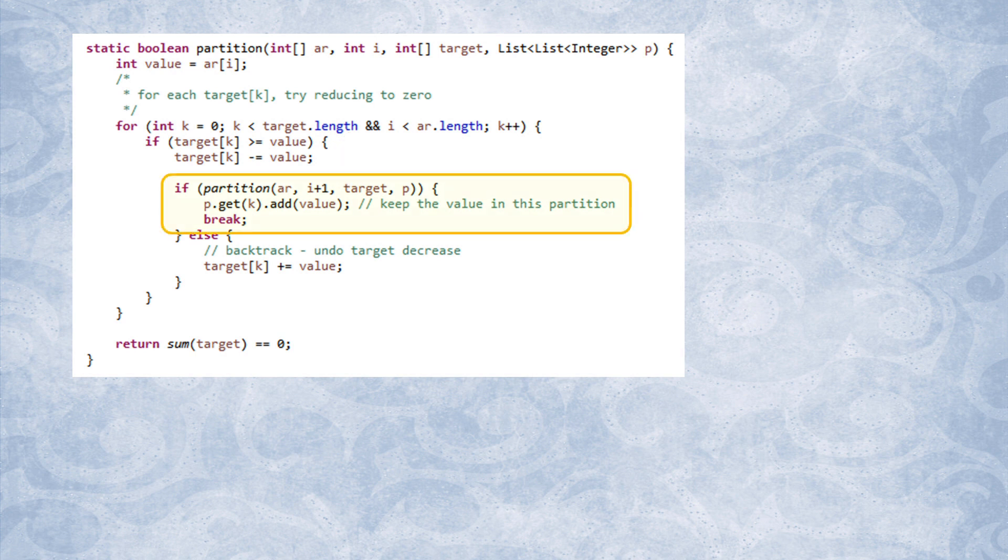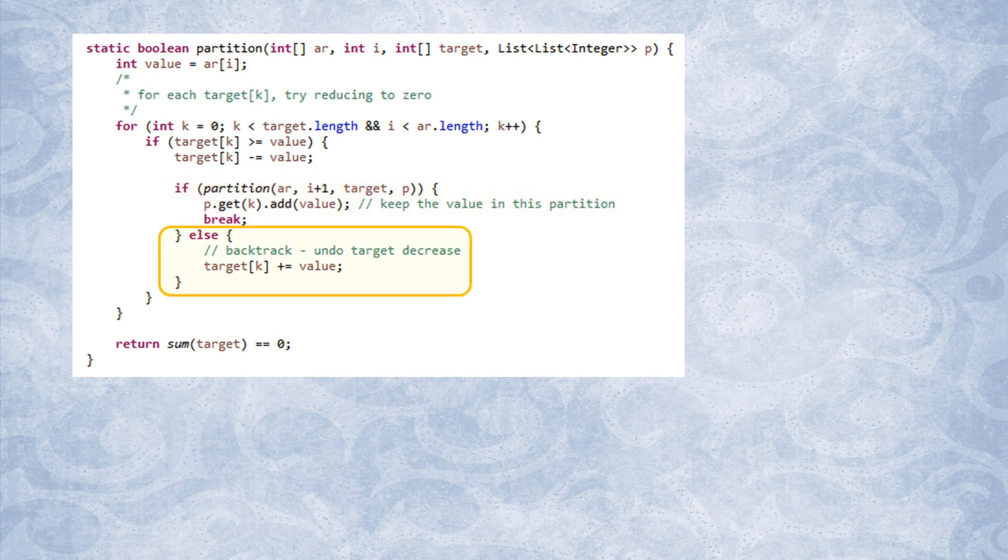The heart of the algorithm is the main decision point. If the rest of the array, from index i plus one, is possible to partition with the reduced target, then we keep the value in the current partition. Otherwise, we need to backtrack and try placing it into some other partition.